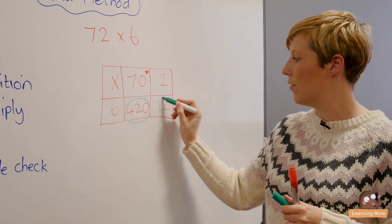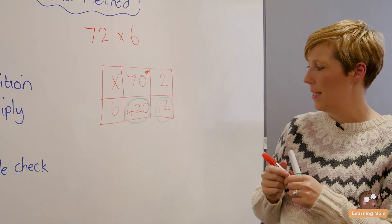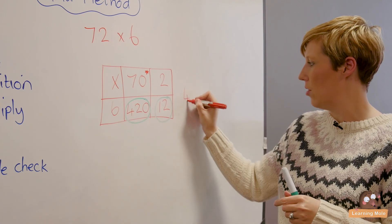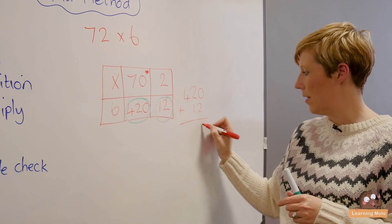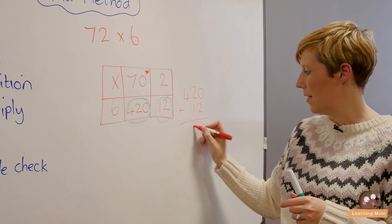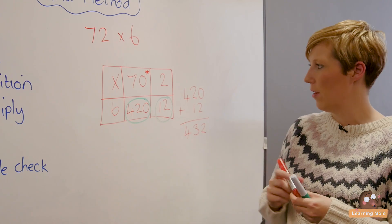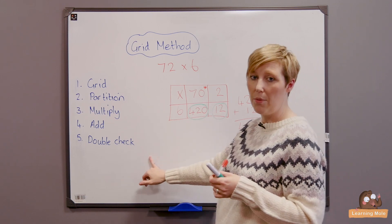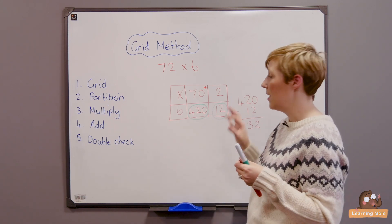I'm now going to move to my adding step and I'm going to add 420 plus 12. I might want to do a column addition just to make sure that I'm totally correct. 0 plus 2 is 2, 2 plus 1 is 3, and 4 plus 0 is 4. My answer is 432 and I want to go back and I want to double check and make sure that I have done all of the steps.